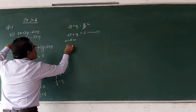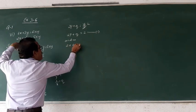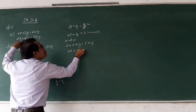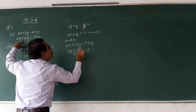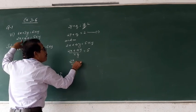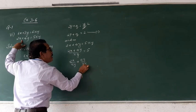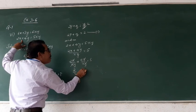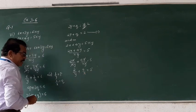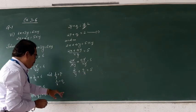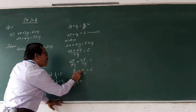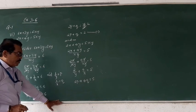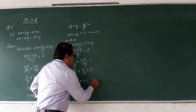Next, 2x plus 4y equals to 5xy. Dividing both sides by xy: 2x by xy plus 4y by xy equals to 5. x gets cancelled, y gets cancelled. This becomes 2 by y plus 4 by x equals to 5. We have already considered 1 by y equals to p and 1 by x equals to q, so this becomes 2p plus 4q equals to 5. This is the second equation.